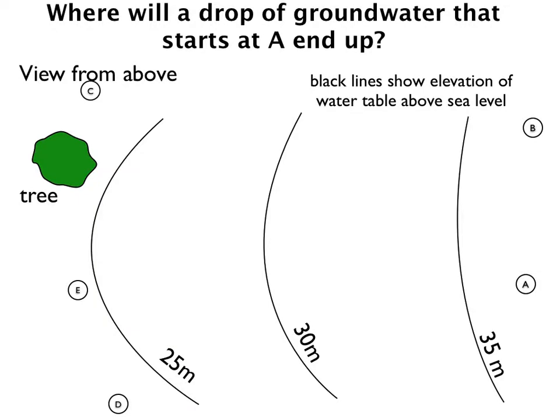Let's look at another example. Here are some contour lines similar to the ones we had before. Say we have a drop of water that lands at point A, percolates down, and hits the water table. Which way is it going to flow?